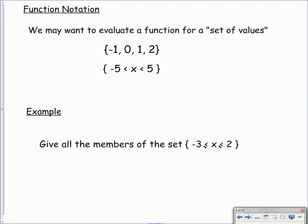Another thing just to note is function notation. We may want to evaluate a function for what we call a set of values. And the way we show a set of values in maths is by these little curly brackets. And that basically means a set. We have this set here, minus 1, 0, 1, and 2. So that set comprises of individual numbers. Underneath that, we can also have sets that say, for example, negative 5 is less than x is less than 5. And that basically means the set of numbers which are in between negative 5 and 5.